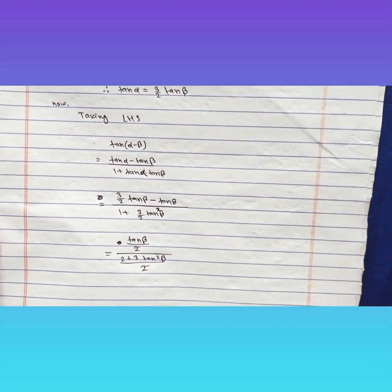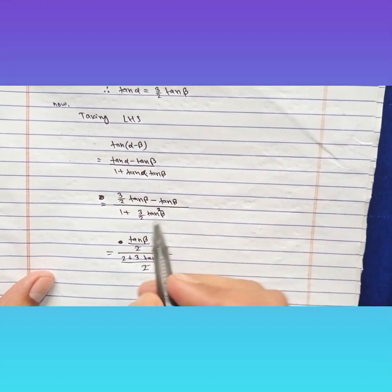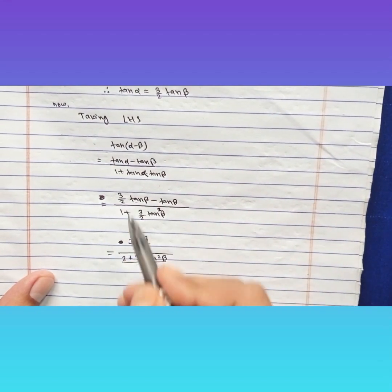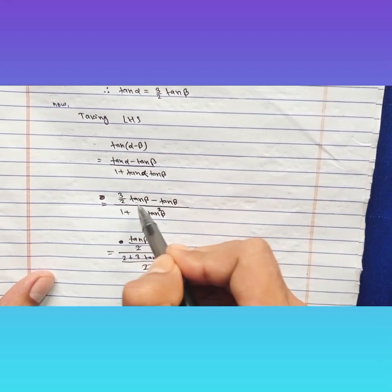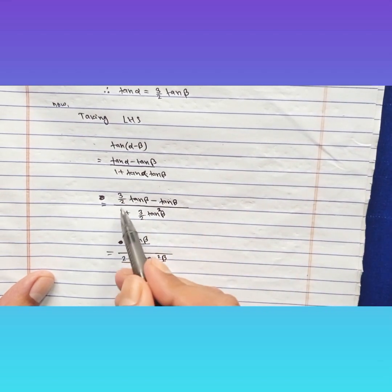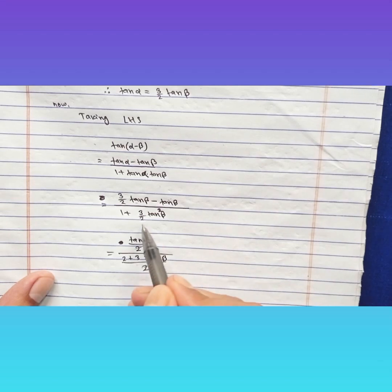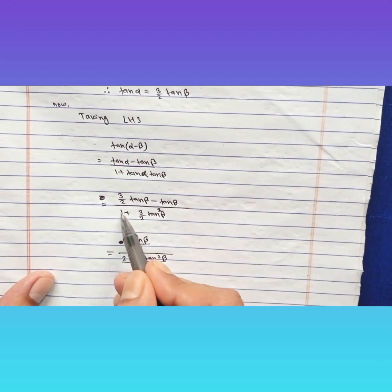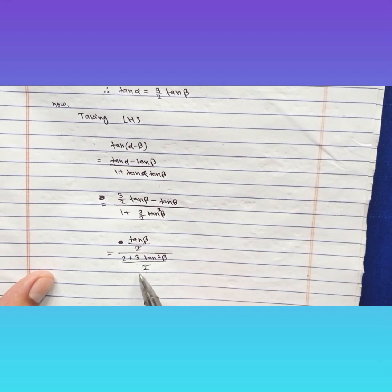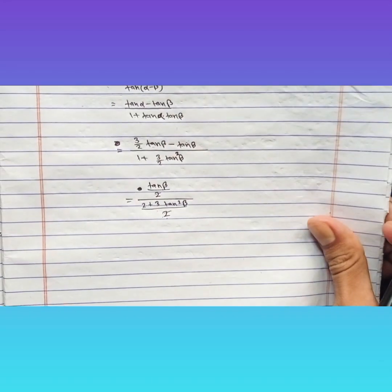Subtracting in the numerator: 3 tan β minus 2 tan β gives tan β, so numerator is tan β. Taking LCM in the denominator: 2 plus 3 tan² β upon 2. The two in numerator and denominator cancel, giving tan β upon (2 plus 3 tan² β).